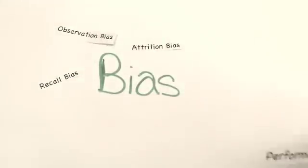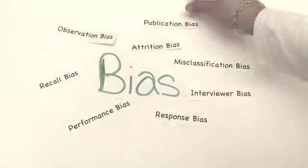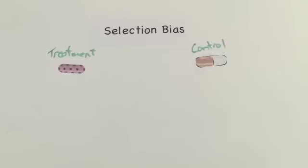There are many types of bias. Let's take a quick look at two examples. One example is selection bias.